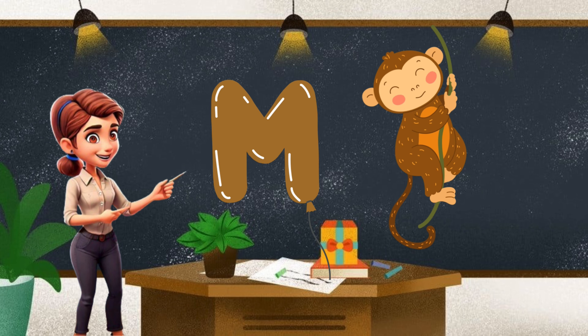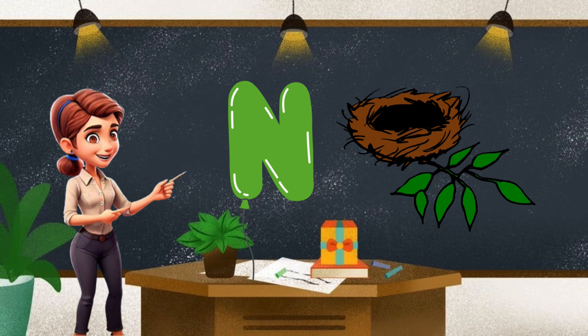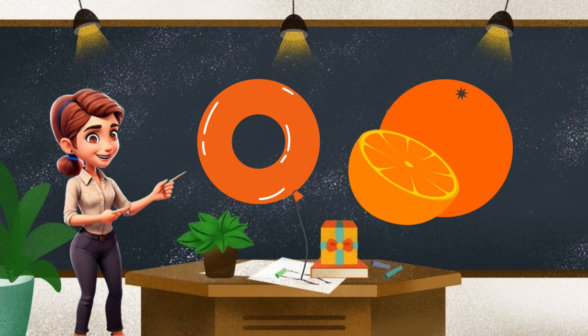M. M for monkey, brown. N for nest. N is green and nest is brown. O for orange. O for orange. It's orange, obviously.